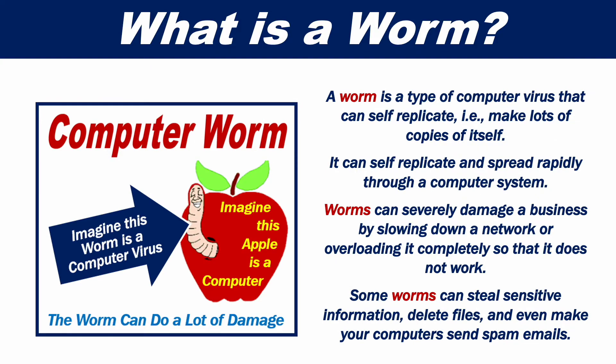A worm is a type of computer virus that can self-replicate — that is, make lots of copies of itself. It can self-replicate and spread rapidly through a computer system. Worms can severely damage a business by slowing down a network or overloading it completely so that it does not work.